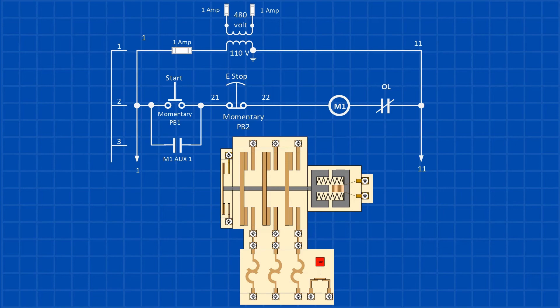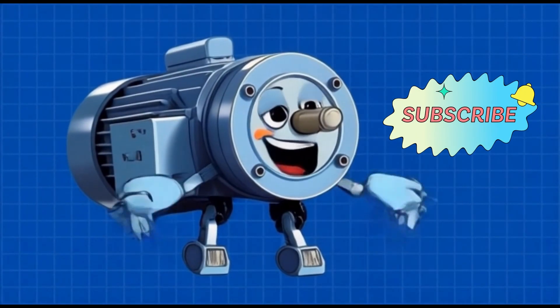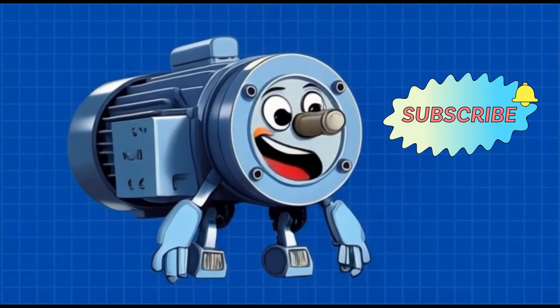The next three components in the circuit are all part of the motor starter. First is the starter coil, labeled M1. Then, there's the auxiliary contact of the starter, and lastly, the normally closed overload contact. So, how does this circuit work? Let's go through that next. If you haven't subscribed yet, go ahead and hit that subscribe button and give us a thumbs up.